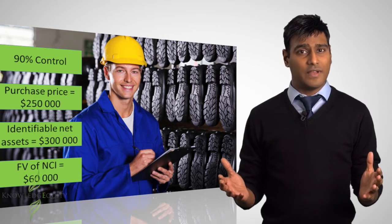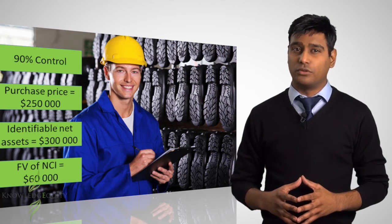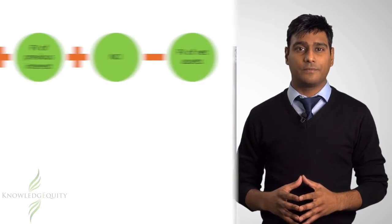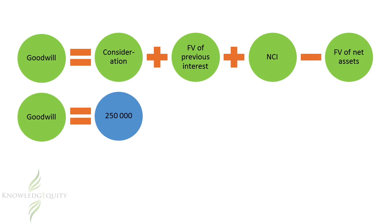What is the value of goodwill if Alpha adopts the full goodwill method? We would need to substitute the amounts into the goodwill formula. Consideration is $250,000. Alpha Limited did not own any previous equity interest in Beta Limited, so this is zero.